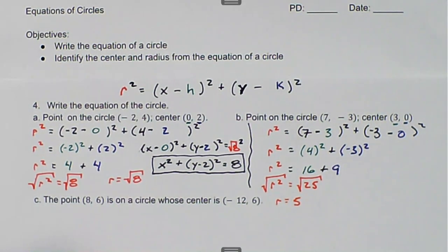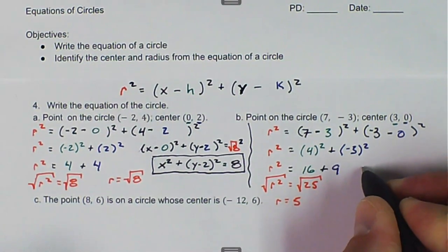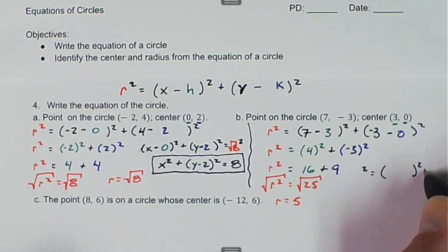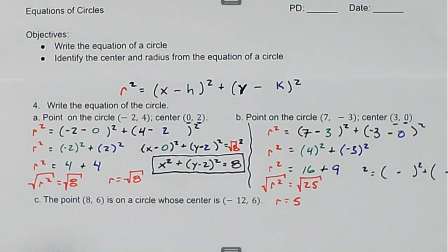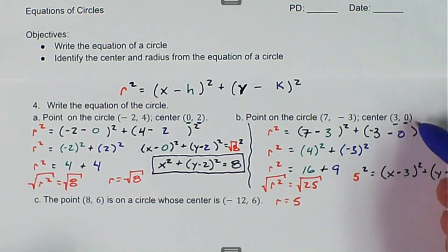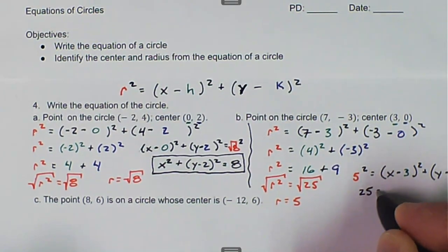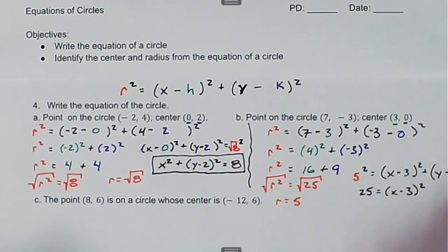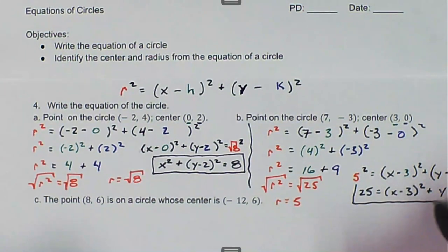Now we have all the values we need and we're going to rewrite the equation. r squared equals two binomials squared and added together, and the sign in the middle is always minus. We calculated r was five, and our center point x is three and y is zero. So the equation is: 25 equals x minus three quantity squared plus y squared. That's the equation for that circle.